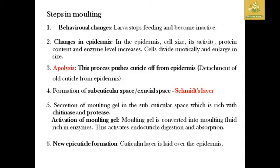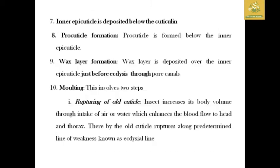The molting gel is produced and new epicuticular formation begins. A new cuticle layer is formed in the epidermis. The inner epicuticle is deposited — this is procuticle formation. The inner epicuticular lines are formed in the procuticle, followed by lamellar deposition. The ecdysis process begins and old cuticle breaks.